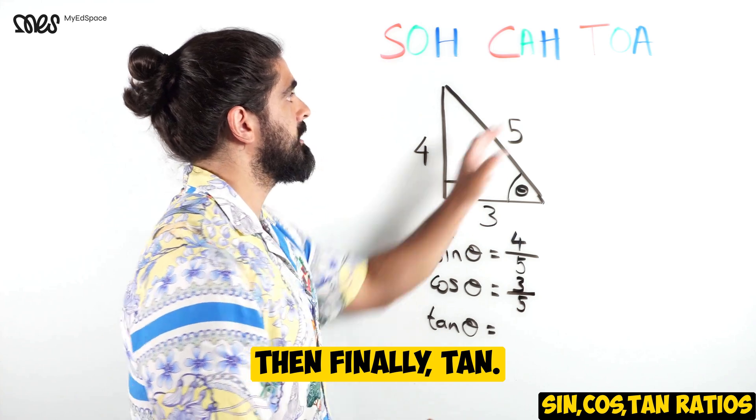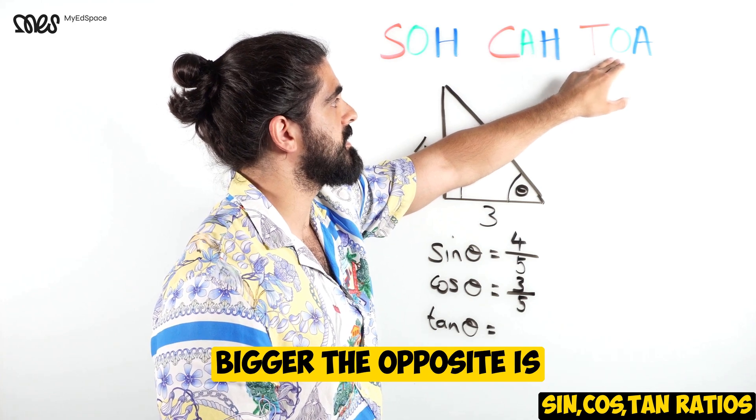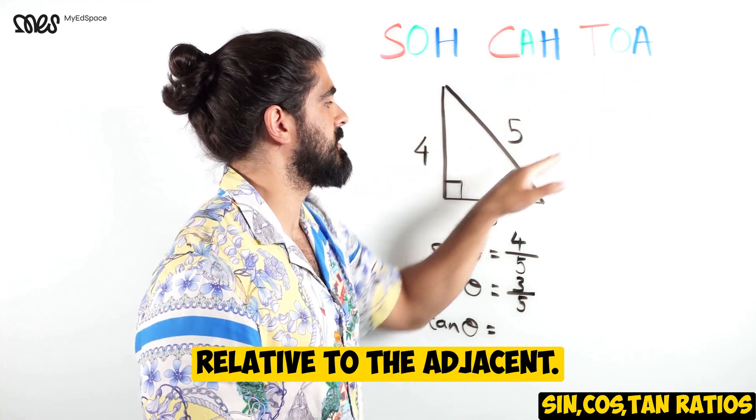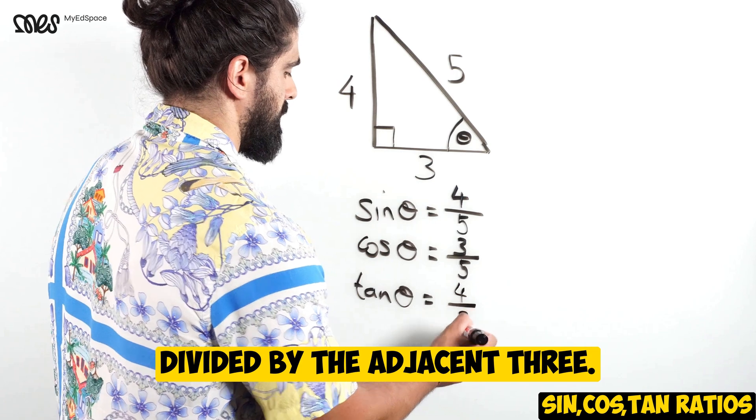Then finally tan. Tan is the ratio of how many times bigger the opposite is relative to the adjacent. So it's the opposite, four, divided by the adjacent, three.